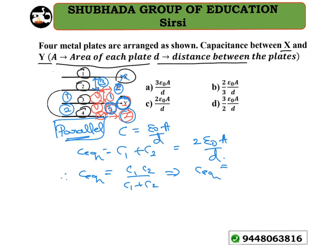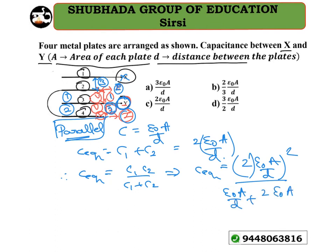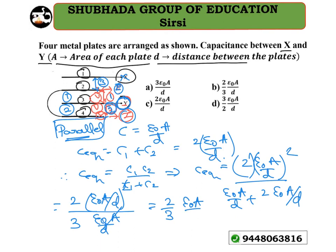So C_eq = (2ε₀A/d × 2ε₀A/d) / (C1 + C2). Here C1 + C2 = ε₀A/d + 2ε₀A/d = 3ε₀A/d. This gives C_eq = (4(ε₀A/d)²) / (3ε₀A/d) = (2/3) × ε₀A/d. So option B is the right answer for this particular question.